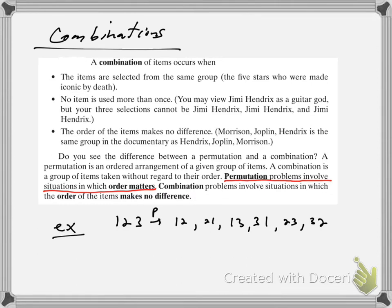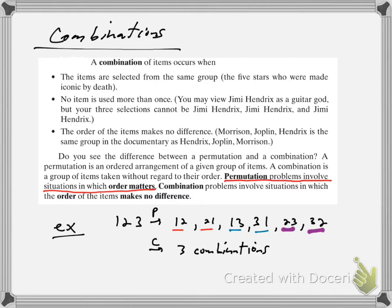We've done every combination. As far as combinations go — because order doesn't matter — one-two and two-one are the exact same, one-three and three-one are the exact same, and two-three and three-two are the exact same. So there's actually only three combinations, but six permutations. When order matters, we get more examples. That's a basic difference between combinations and permutations.